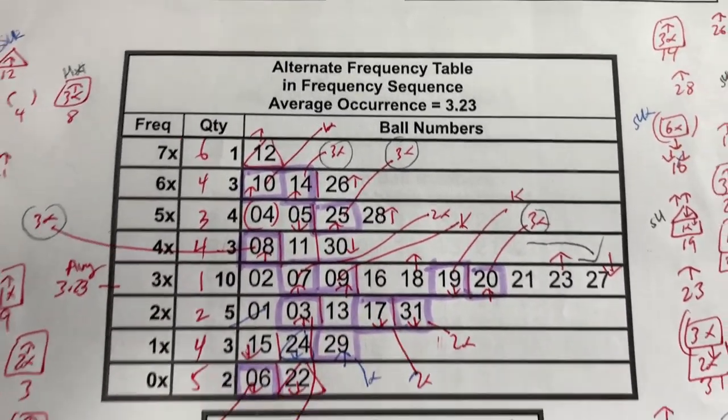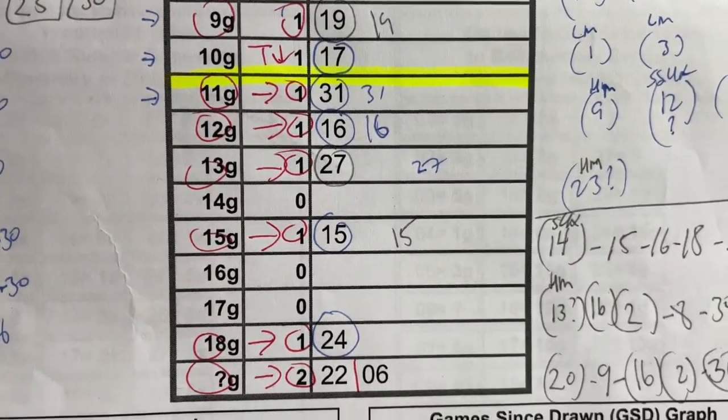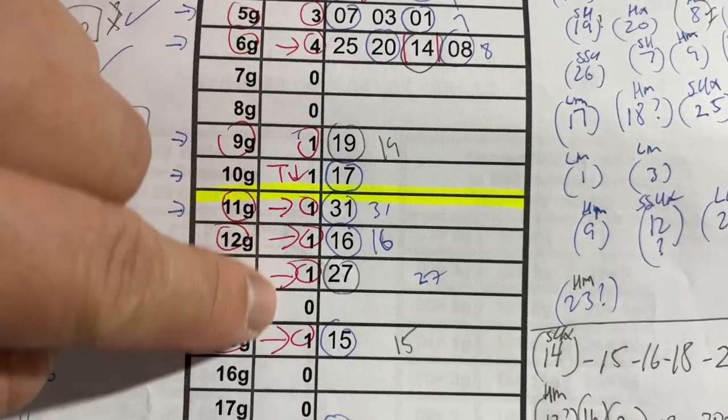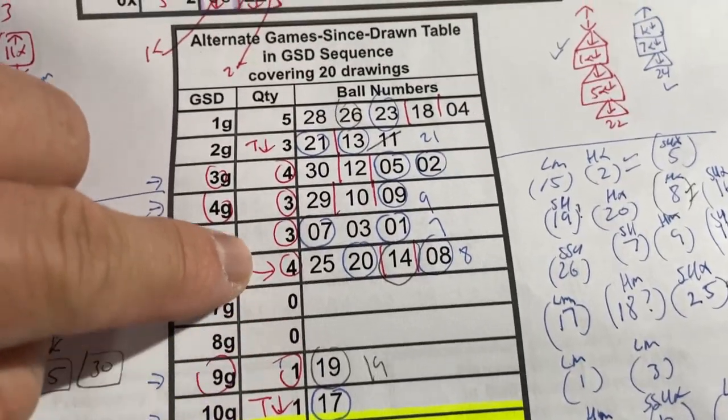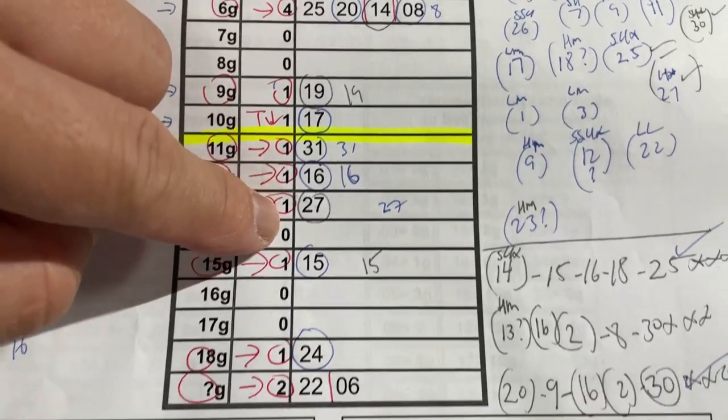I've been working very hard trying to find the best numbers for us. Anything below this yellow line are cold numbers, and anything above it are warm to hot numbers. I always choose at least one cold number.